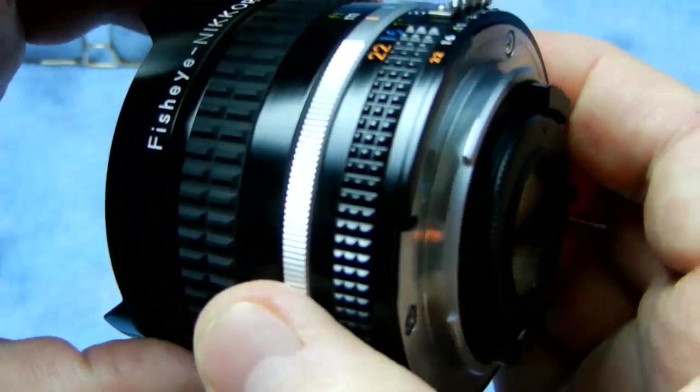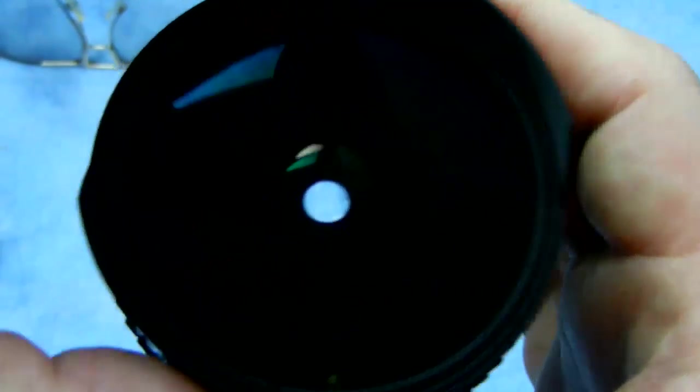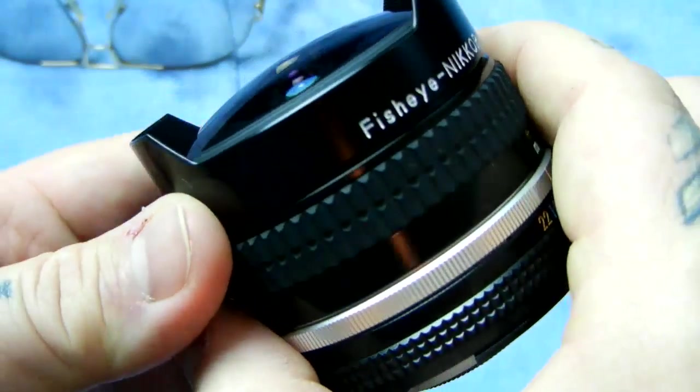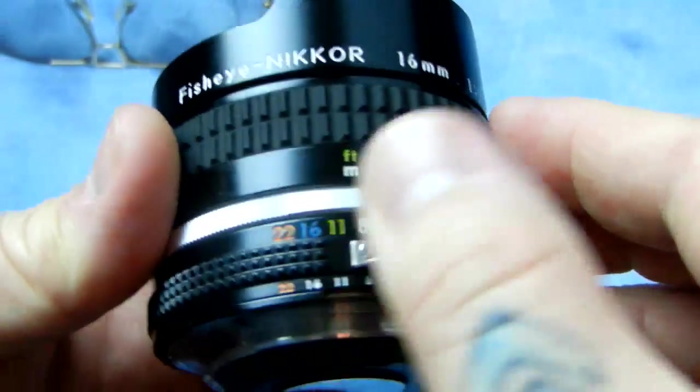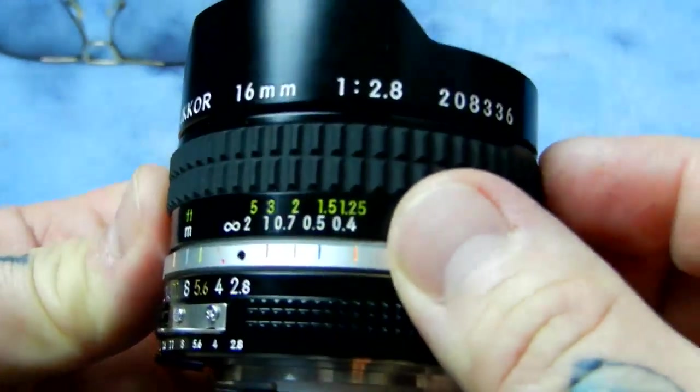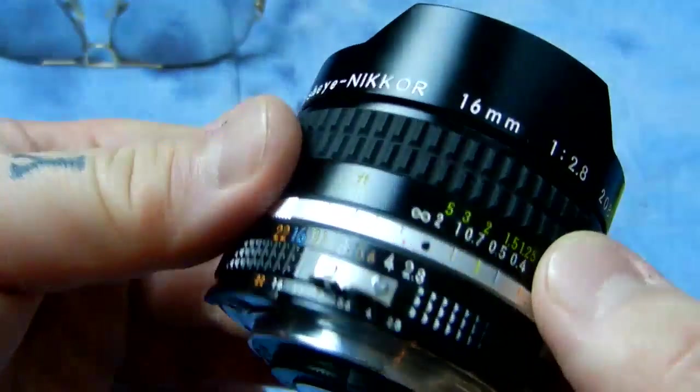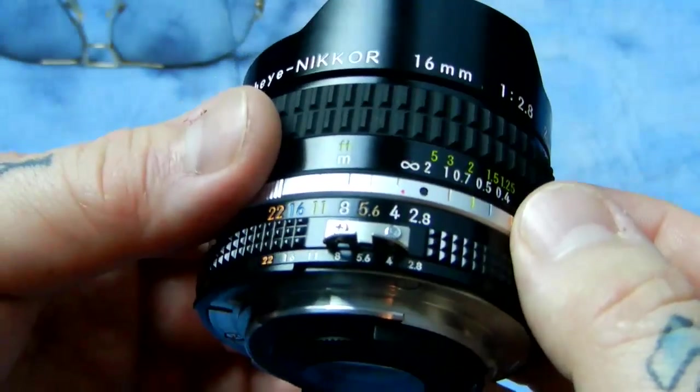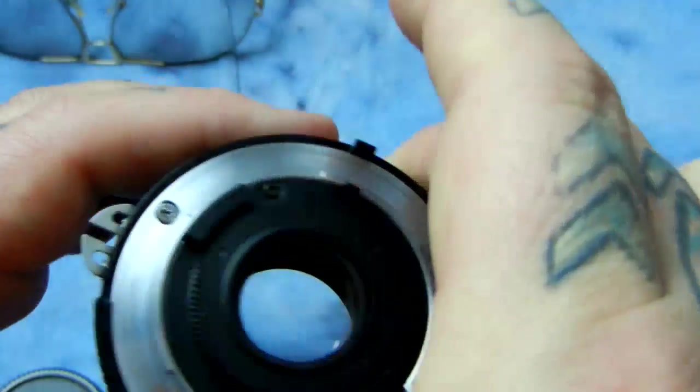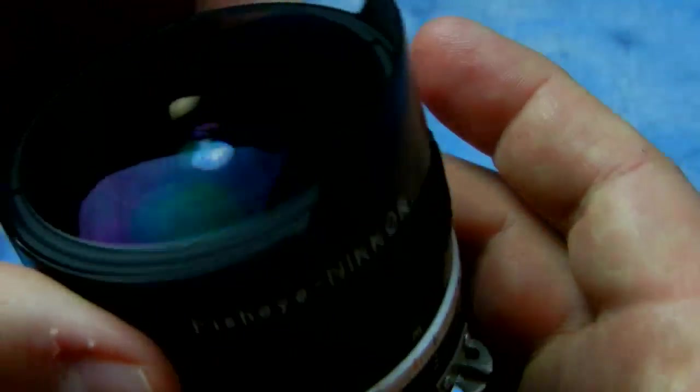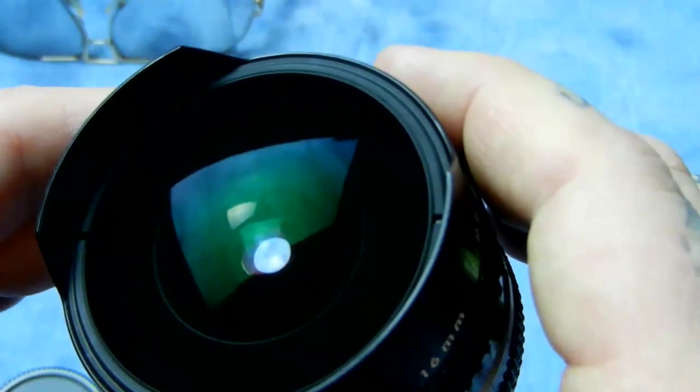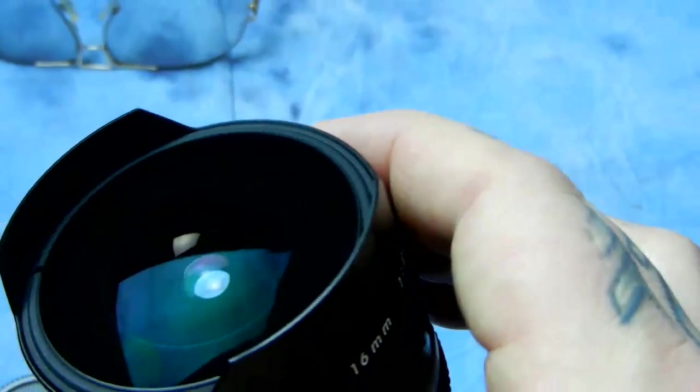Yes folks, heat kills lenses, fungus kills lenses, all sorts of stuff kills lenses but nothing will kill a lens better, quicker and nastier than heat. Because you look at this lens and go oh my god it's so beautiful, this old lens was used twice and put away—yeah put away in a hot spot.